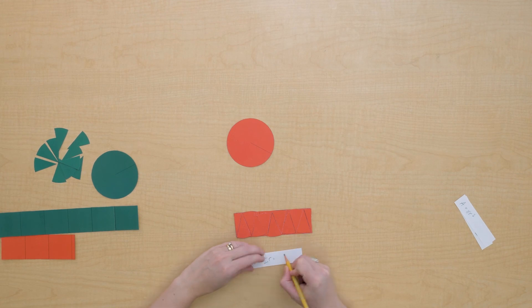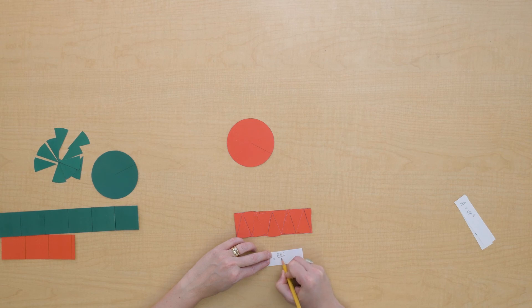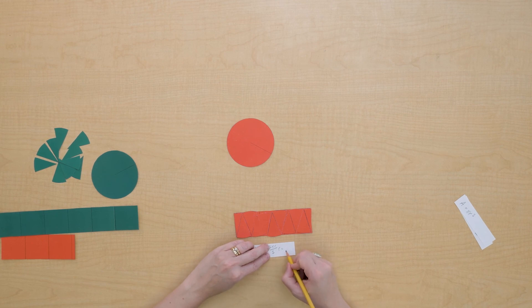So again, we can do 2πr divided by 2 times the radius, and that will give us πr squared.